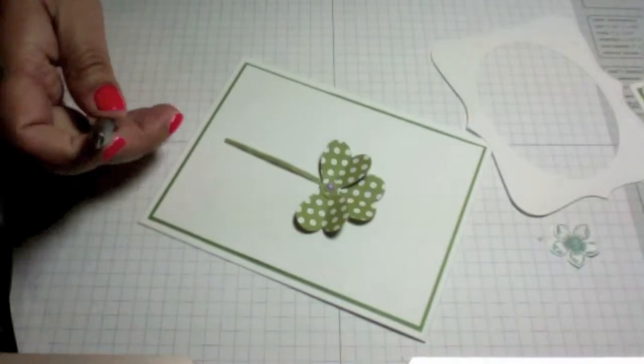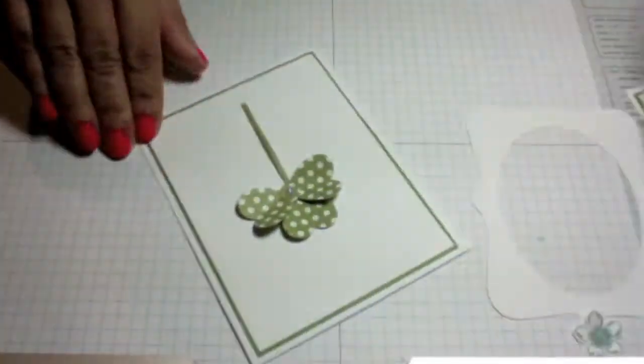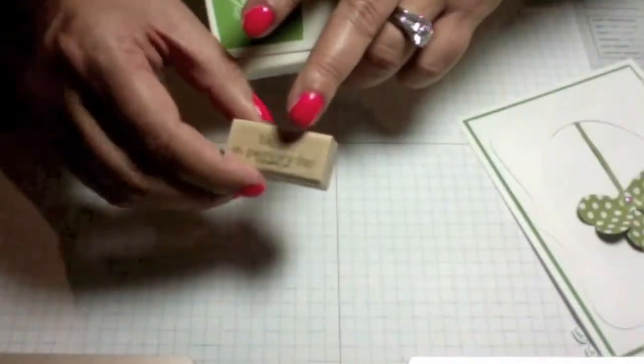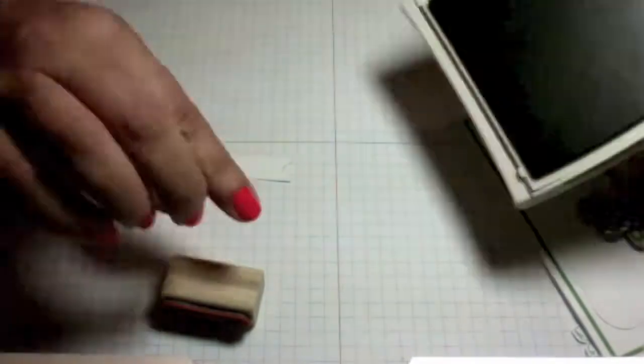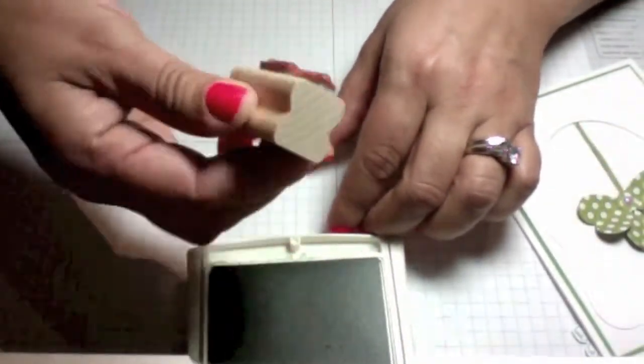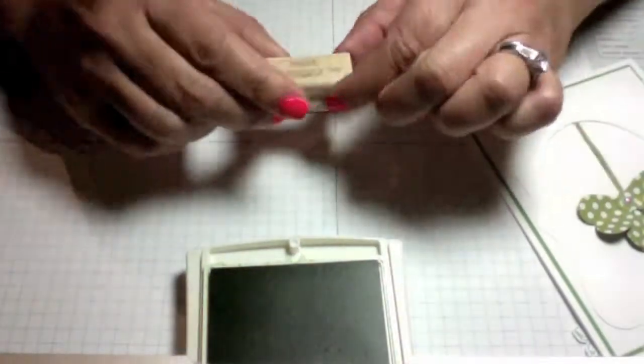Next I'm going to stamp my sentiment. It's Happy St. Patrick's Day from a stamp called Teeny Tiny Wishes, a great stamp set to own by the way. It has every sentiment. I'm using gumball green ink and stamping that on the teeny tiny banners that I die cut ahead of time.